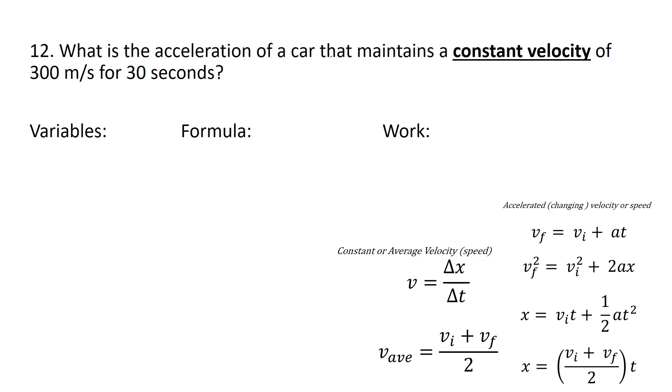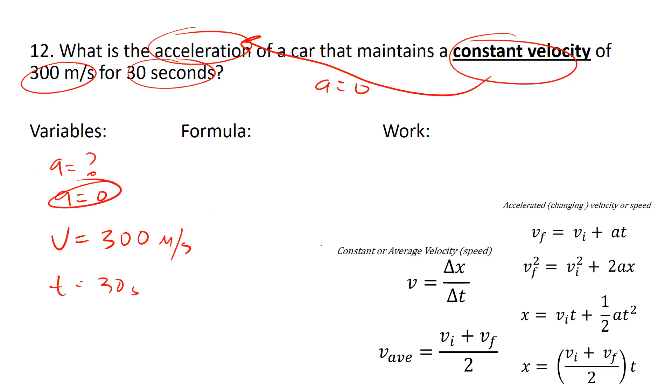Next problem. What is the acceleration of a car that maintains a constant velocity of 300 meters for 80 seconds? Some of you already figured out this is kind of a trick question, but let's pretend like I didn't figure it out. A equals question mark. The term constant velocity means A equals 0. If you were traveling at a constant velocity, that would mean that it's just a V and not VI and VF. So there's a lot of things giving this away right now. Constant velocity means acceleration equals 0. At that point, I have my answer. I don't have to do any work. No formula, no work required.